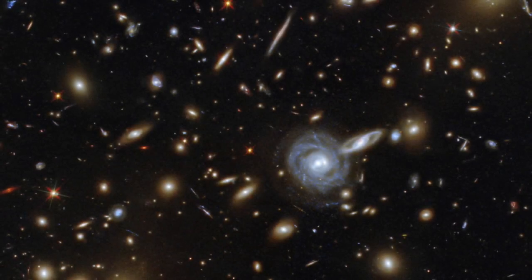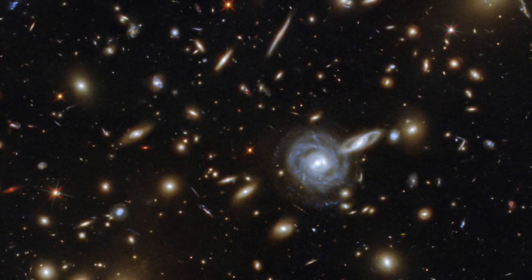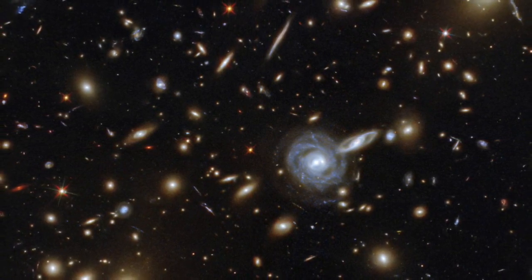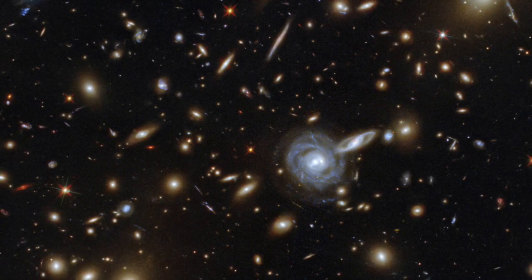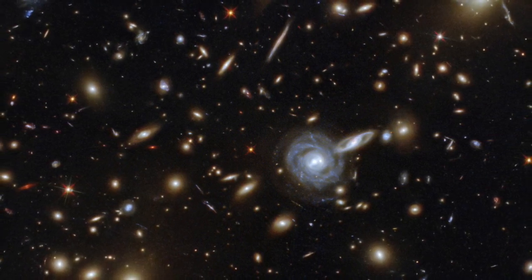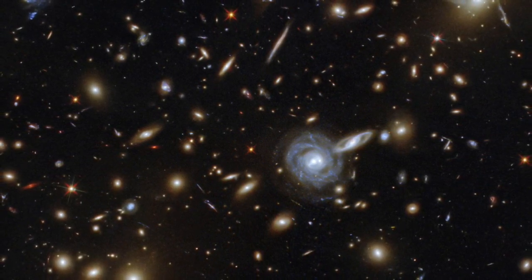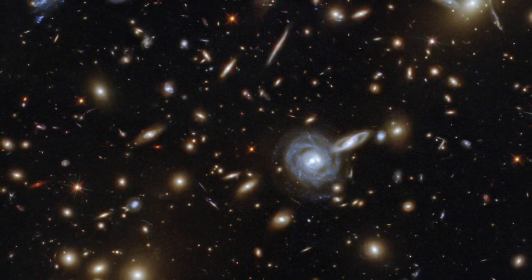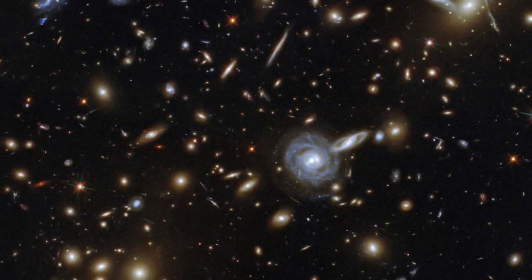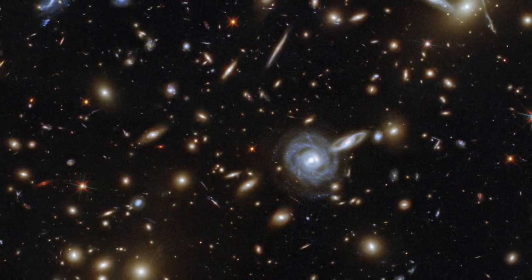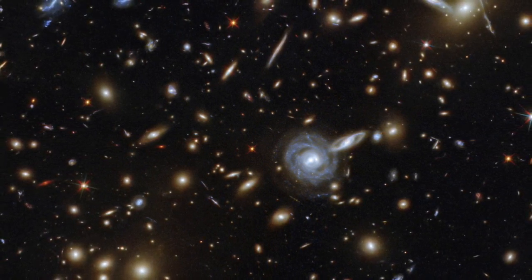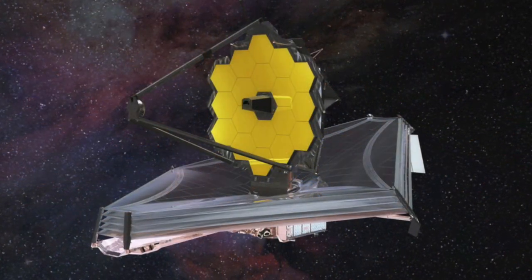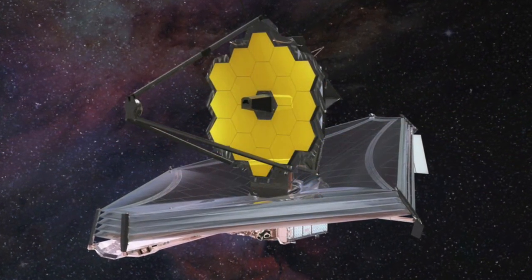The rate at which the universe is expanding is known as the Hubble constant, and it's one of the key factors in understanding the evolution and ultimate fate of the cosmos. But astronomers have been troubled by a persistent discrepancy between the value of the constant measured in various different ways and its value predicted from the afterglow of the Big Bang. This discrepancy is called the Hubble Tension.